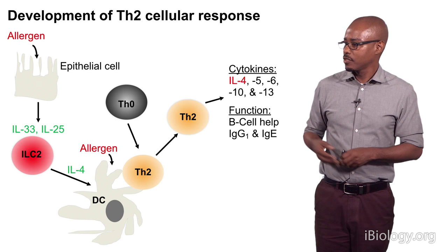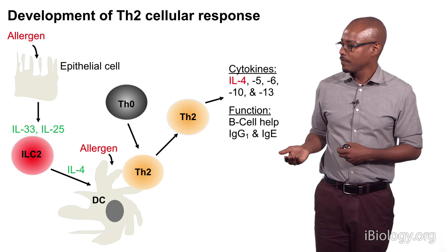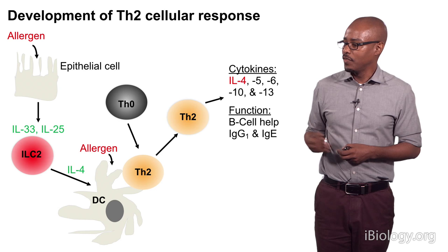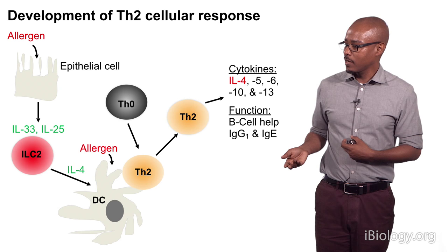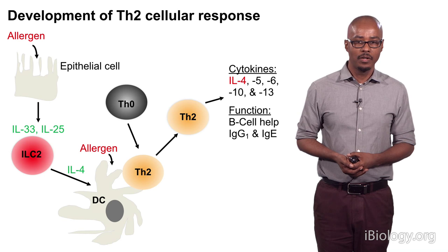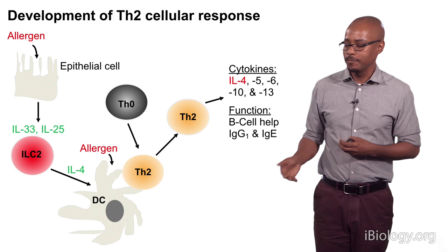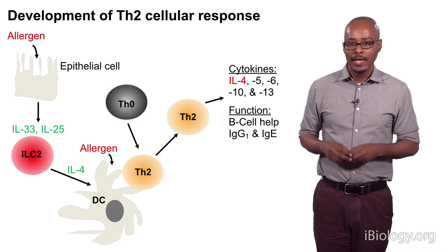How does an allergic response develop? First, we are exposed to an allergen. In general, that allergen will interact with an epithelial cell. That epithelial cell will produce cytokines such as IL-33 and interleukin-25, and those two cytokines can drive the activation of the innate lymphoid cell type 2 (ILC2). That ILC2 cell will produce a cytokine called interleukin-4, which can condition dendritic cells and T cells to change the nature of that immune response. Dendritic cells will pick up those allergens, process them into small pieces, and present that allergen to T cells. Under the influence of interleukin-4, that T cell becomes a T-Helper 2 cell.